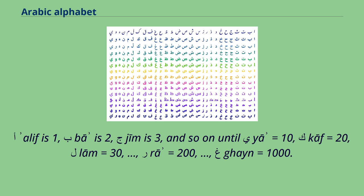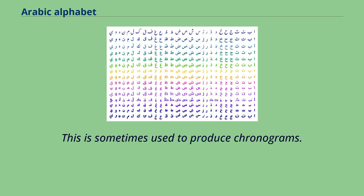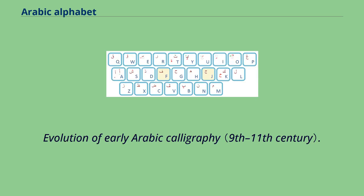In the Abjad numeral system: Alif equals 1, Ba equals 2, Jim equals 3, and so on until Ya equals 10, Kaf equals 20, Lam equals 30, Ra equals 200, and Ghain equals 1000. This is sometimes used to produce chronograms.